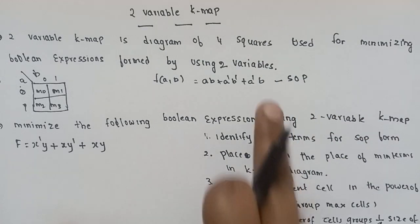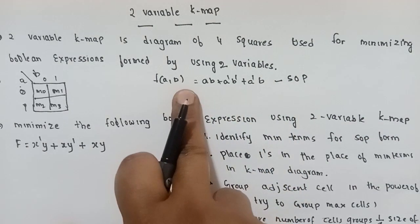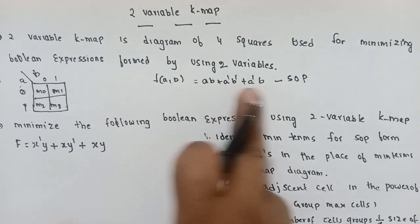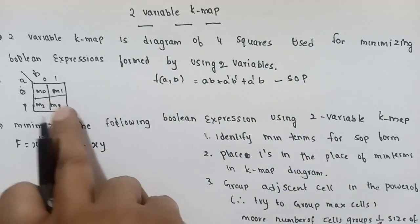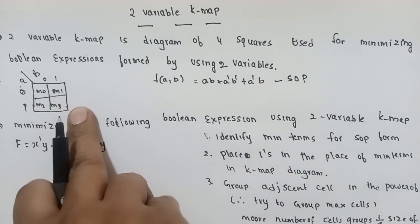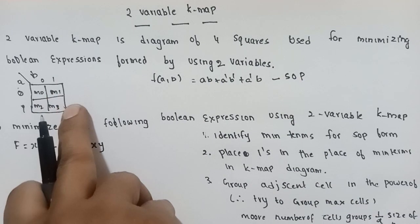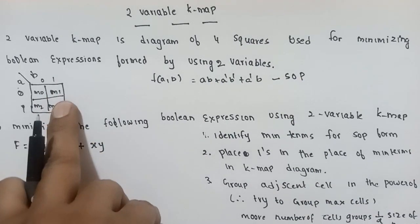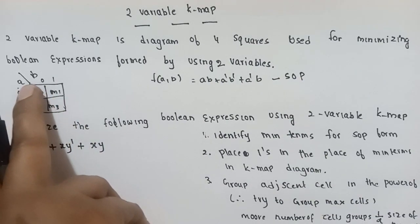If you want to learn to minimize it using two variables K-map, this is a diagram of four squares. This is the representation of a two variable K-map.